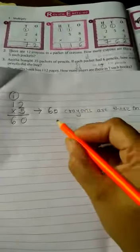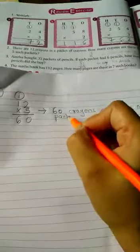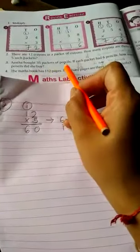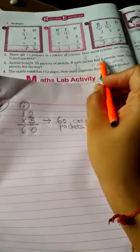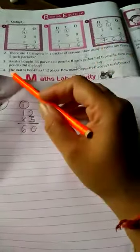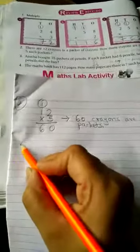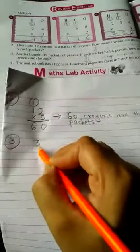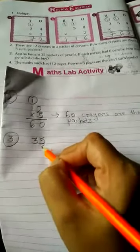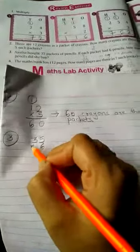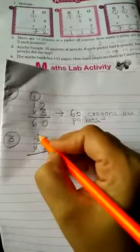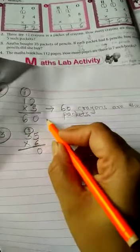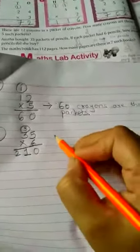Third number: Ashu bought 35 packets of pencils. If each packet has 6 pencils, how many pencils did she buy? So 35 is there and in that 6 pencils are there, so you have to do multiplication. 6 fives are 30. 6 threes are 18, 19, 20, 21. So 210. You have to write answer: she bought 210 pencils.